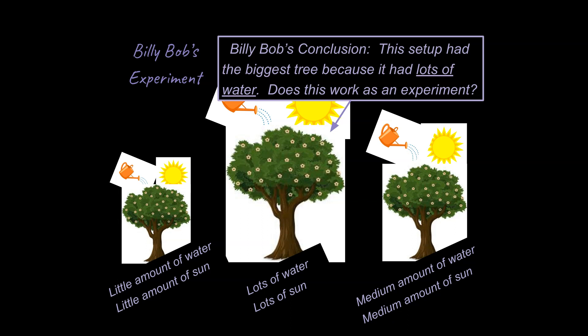And Billy Bob's conclusion was, this setup had the biggest tree, this middle setup right here, had the biggest tree, the largest results, because it had lots of water. Does this work as an experiment?